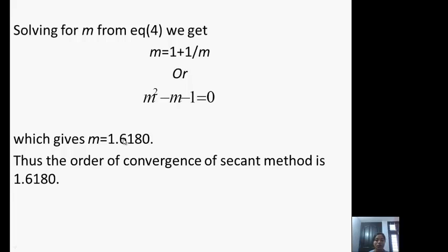Thus the order of convergence of secant method is 1.6180 which is less than the convergence order of Newton-Raphson which was 2. So this iterative method converges slowly as compared to Newton-Raphson method.